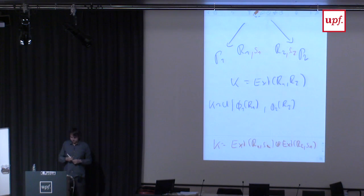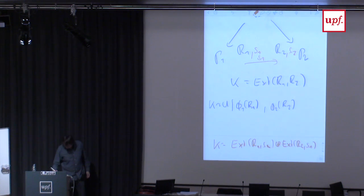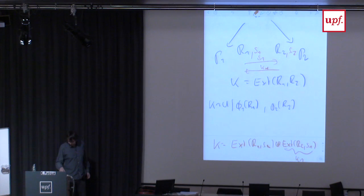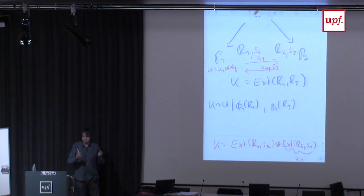The key K will still stay close to uniformly random even with leakage from both sides, as long as the leakage is not too big. But reconstruction of the secret is now very efficient: player P1 sends his short seed S1 to P2; P2 computes a short key K1 and also sends his seed S2; player P1 can then compute the key K using S2 and K1. The secret is reconstructed with very short communication.